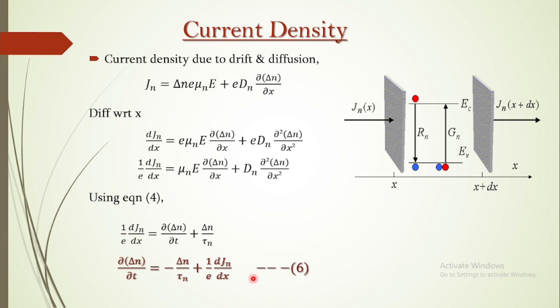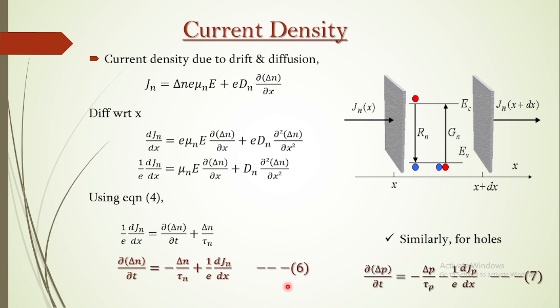This leads to the continuity equation for electrons in terms of current density J_n, and similarly for holes in terms of hole current density J_p. These are some of the key details about continuity equations with respect to all three factors and in terms of current density, which are important parameters in the p-n junction under non-equilibrium conditions.